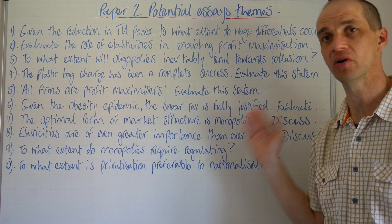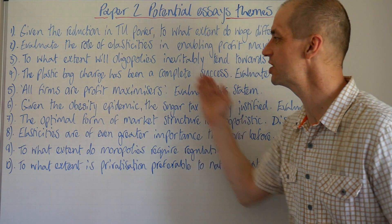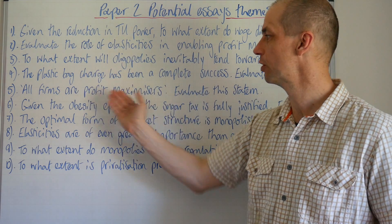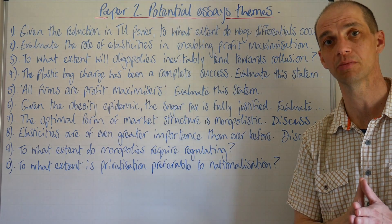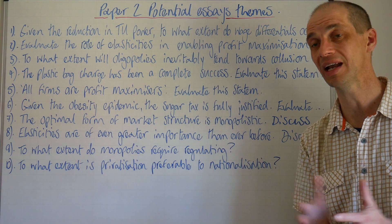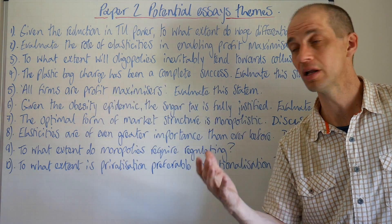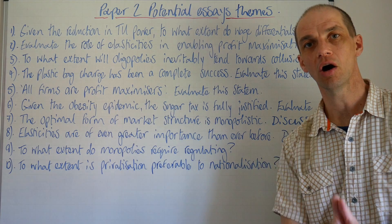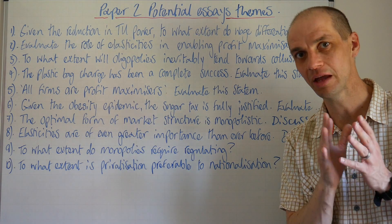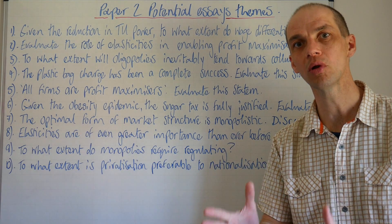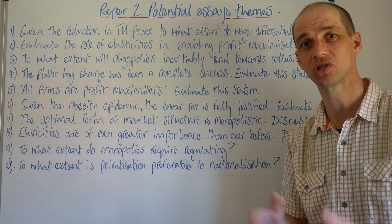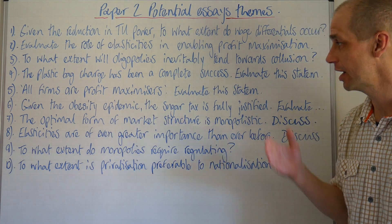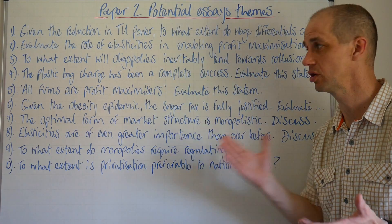Number five: all firms are profit maximisers — evaluate this statement. This is really a question about firms' aims and objectives. Most firms will try to focus on profit maximisation, but various things can get in the way. It's also important to consider over what period they are trying to maximise profits — are they short-term profit maximisers prone to short-termism, or are they more like Amazon, Netflix, and Uber, looking toward long-term profit maximisation?